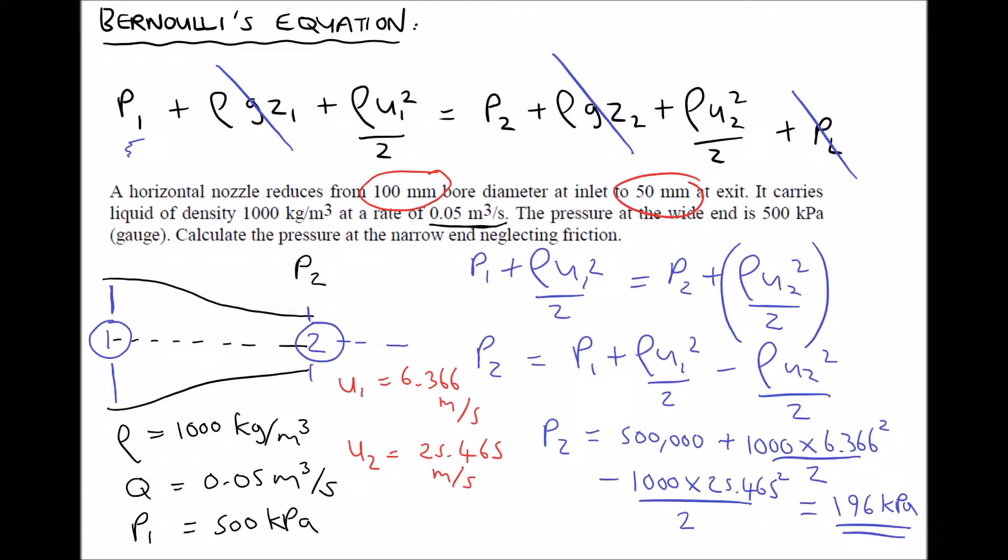Therefore, it must lose pressure energy. So at position 2, we have higher kinetic energy, but we have lower pressure energy. And at position 1, we have lower kinetic energy because the fluid is traveling more slowly, but we actually have higher pressure energy. Because as one increases, the other actually decreases.